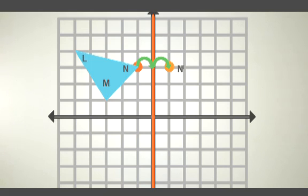Now point L. Point L is five units away from the reflection line, so L prime is five units from the other side of the reflection line.